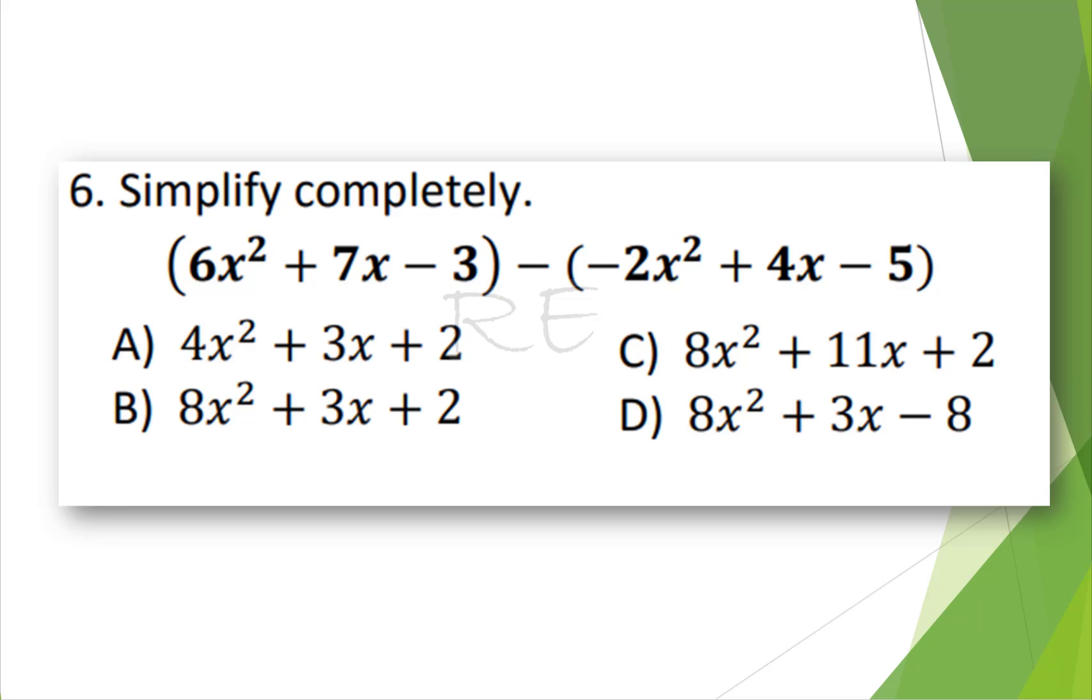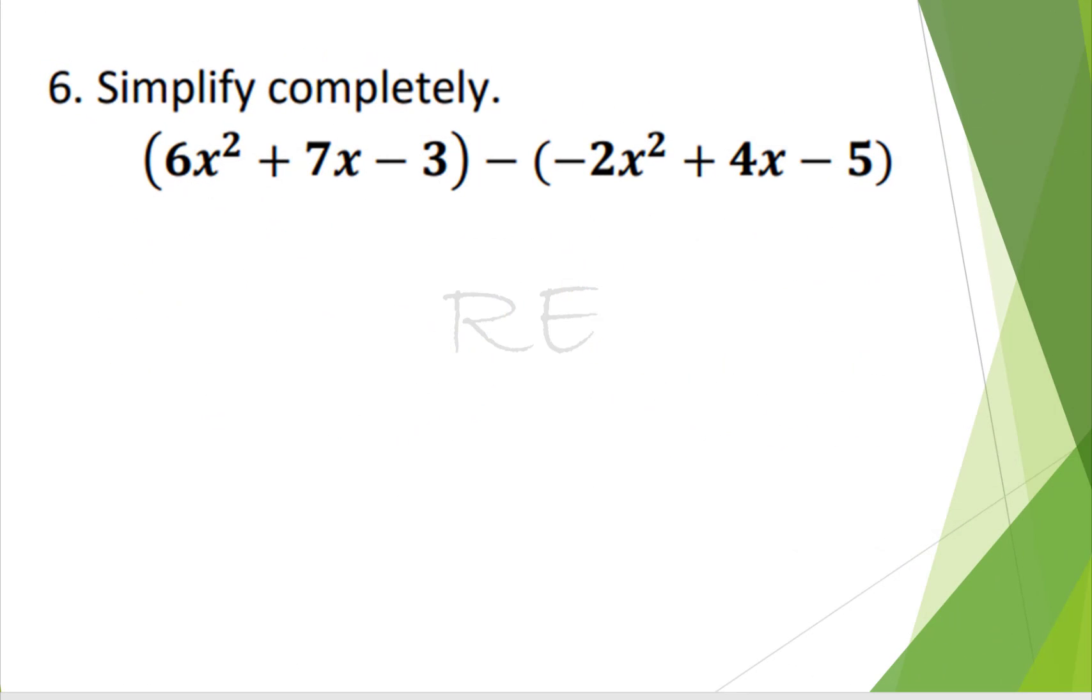Simplify completely: open parenthesis 6x squared plus 7x minus 3 close parenthesis minus open parenthesis negative 2x squared plus 4x minus 5 close parenthesis.